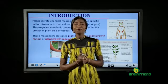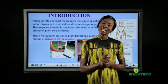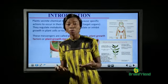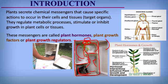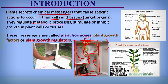The teacher explained that plants usually grow towards the source of light, and this growth towards the source of light is as a result of hormones present in plants. So plants contain hormones as well as animals. Plants secrete several chemical messengers that cause specific actions to occur in their cells and in their tissues, in target organs, as we saw in the case of animals. These chemical messengers regulate metabolic processes in plants and they also stimulate or inhibit growth in plant cells and plant tissues. Plant hormones are similar to those hormones present in animals.